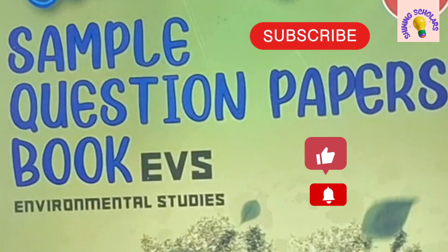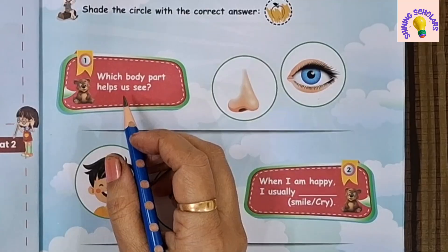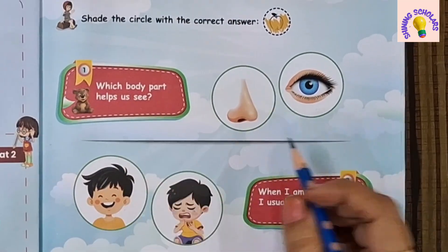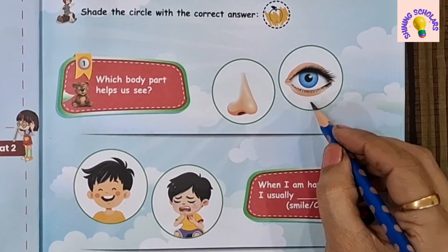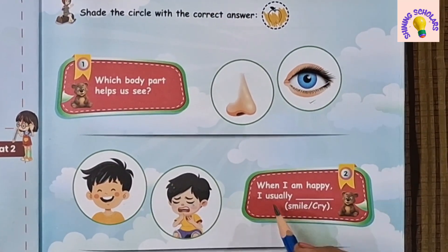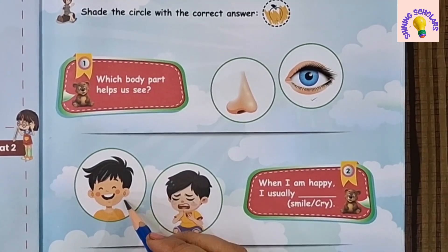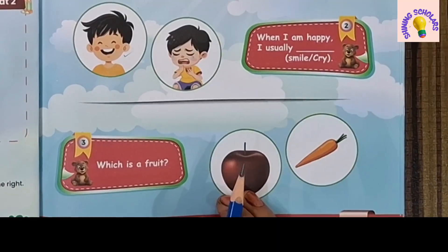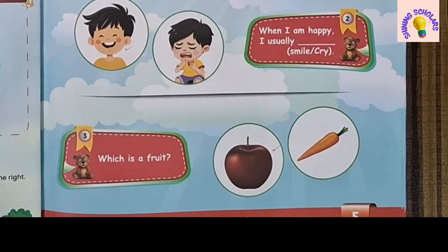First sample paper, first question: Which body part helps us see — nose or eye? Eye. When I'm happy, I usually smile, not cry. Which is a fruit? Apple is a fruit.